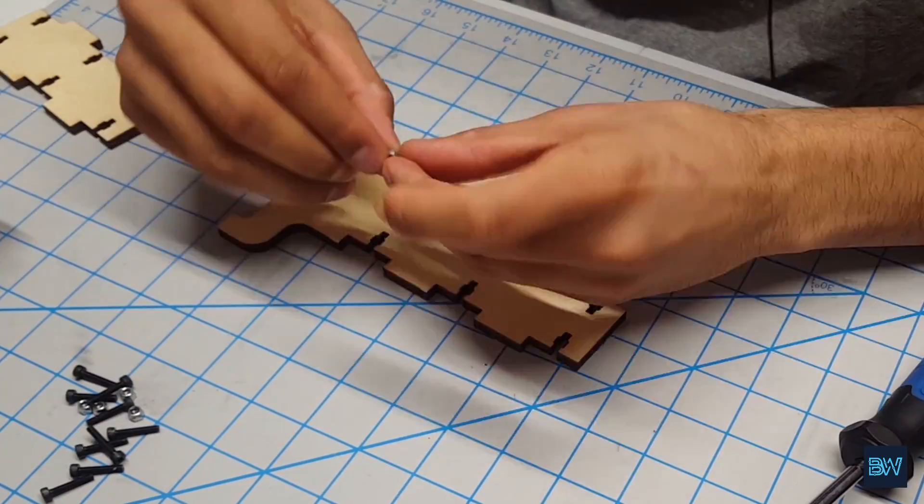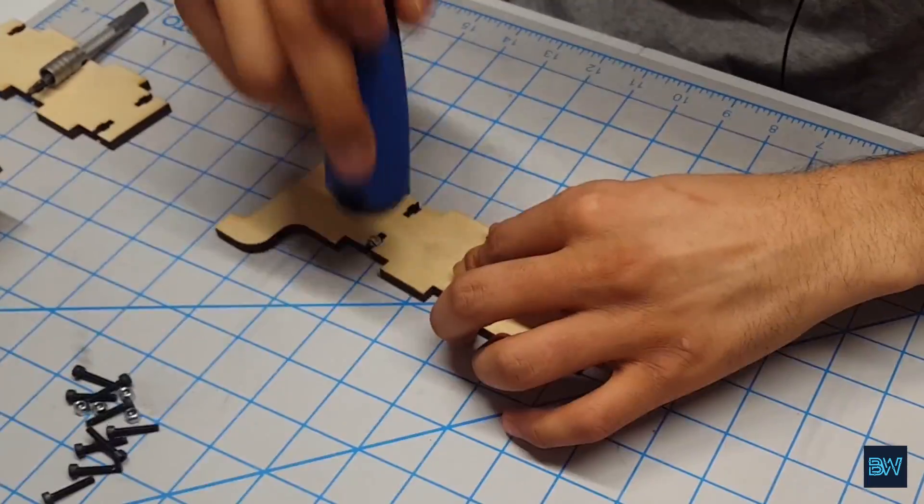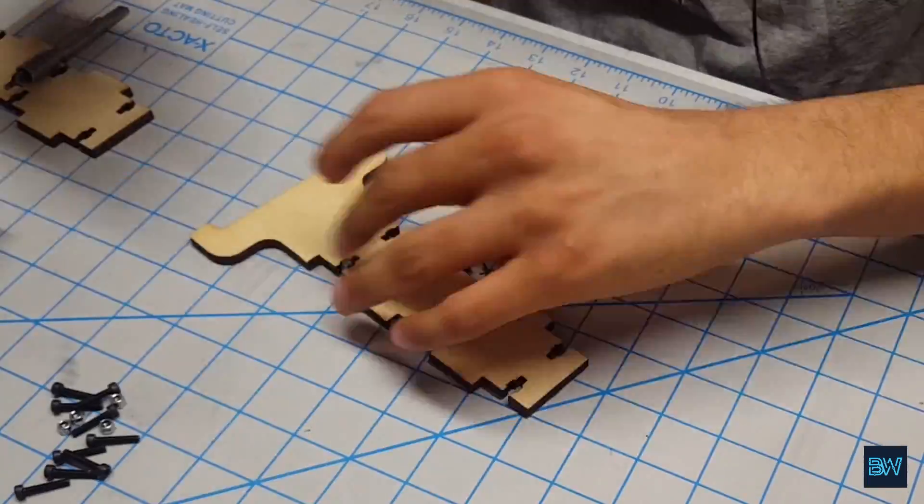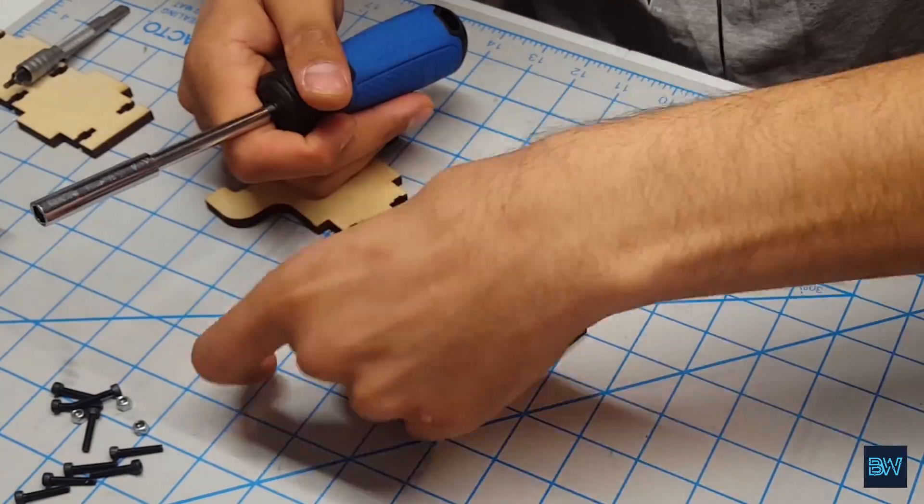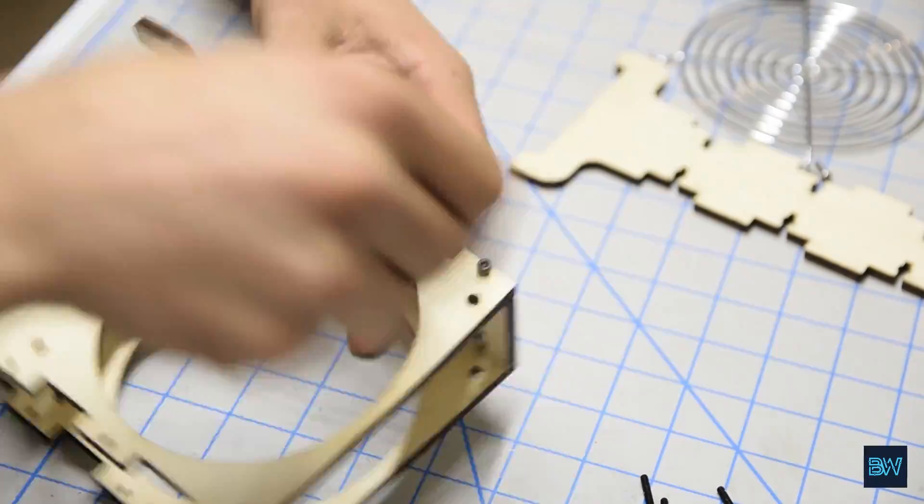Now we proceed to assembly. Assembly is pretty simple. The first step is to loosely assemble the housing using M3 screws and nuts, leaving the bottom open for now.